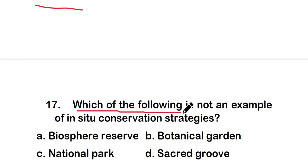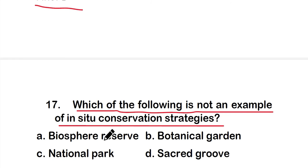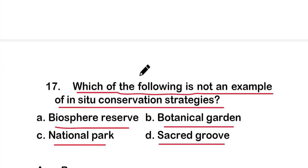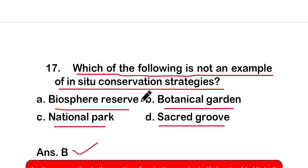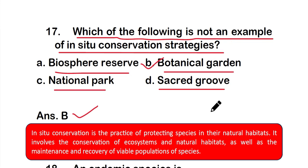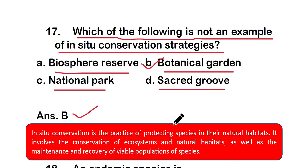Question number seventeen: Which of the following is not an example of in-situ conservation strategies? Options: option A: biosphere reserve; option B: botanical garden; option C: national park; option D: sacred groves. The right answer is option B — botanical garden is not an example of in-situ conservation. In-situ conservation is a practice of protecting species in their natural habitats, involving conservation of ecosystems and natural habitats.